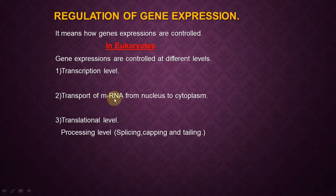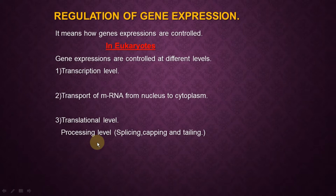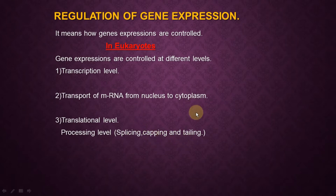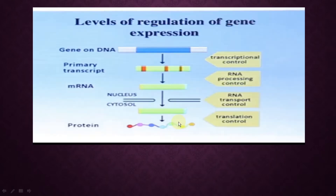Second is the transport of mRNA — when mRNA is synthesized and transported from nucleus to cytoplasm, this process is also controlled by the gene. The last level is the translational level, where protein is synthesized from mRNA. At the processing level — where splicing, capping, and tailing takes place — the gene plays an important role. So at every stage in eukaryotes, gene expression is playing an important role.